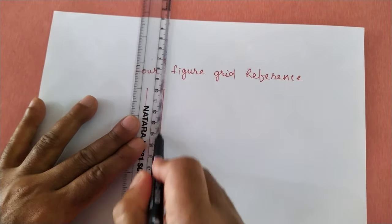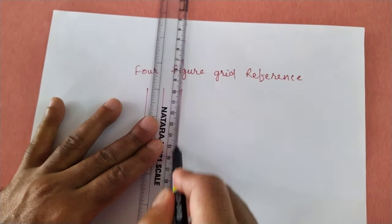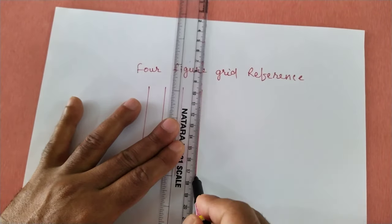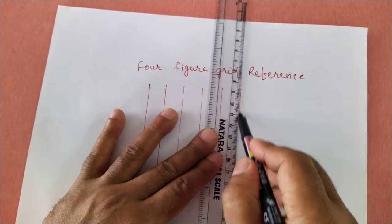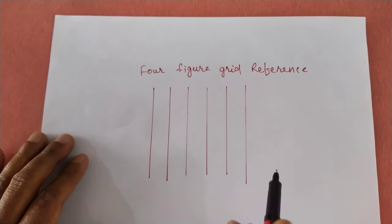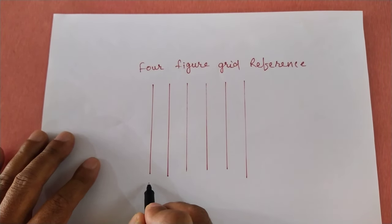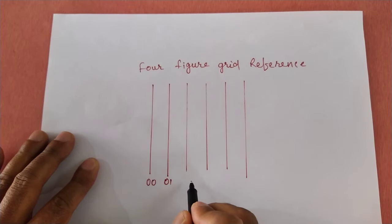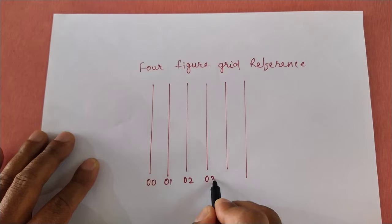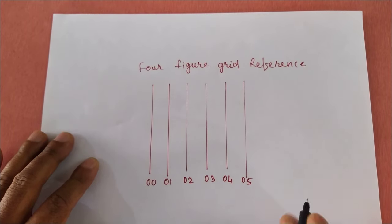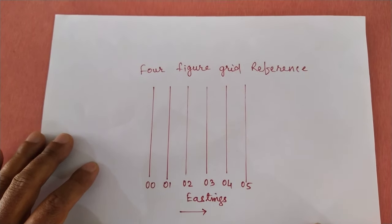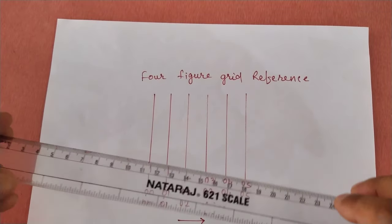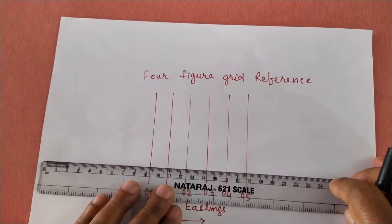As you already know, the vertical lines are Eastings, and this number will be increasing towards the east side: 00, 01, 02, 03, 04, and 05 — these are Eastings. The number is increasing towards the east side, and these are vertically shown on the topographical map.